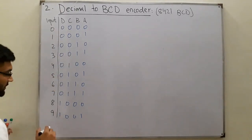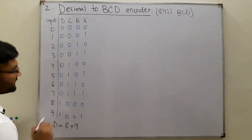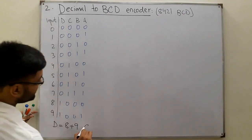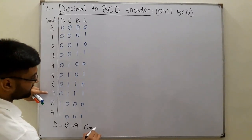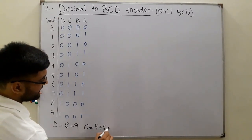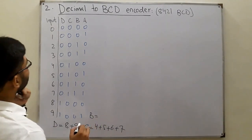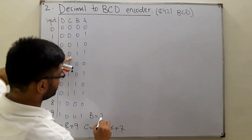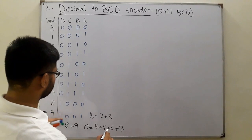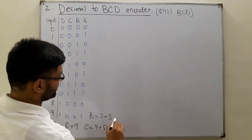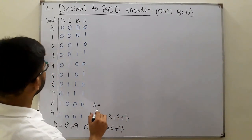D is high for eight and nine. C is high for four, five, six, and seven. B is high for two, three, six, and seven.